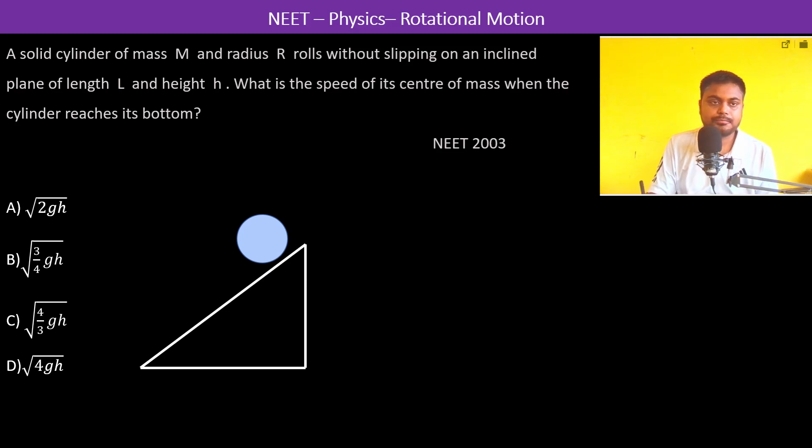Solid cylinder. Therefore, the moment of inertia is going to be m r square by 2. It rolls without slipping on an inclined plane, so it is rolling and it is not slipping.